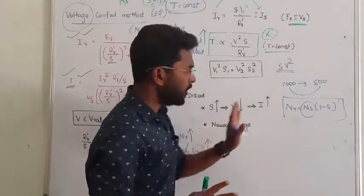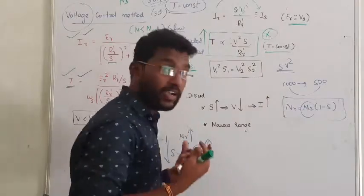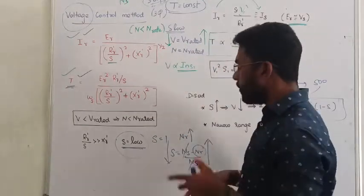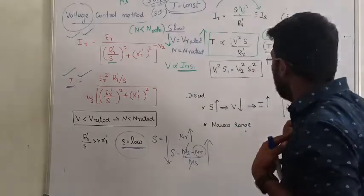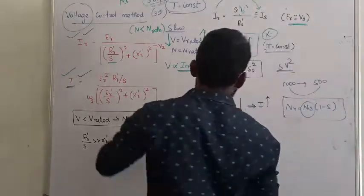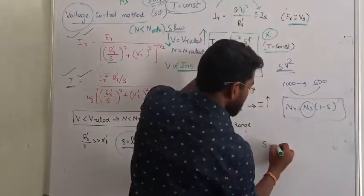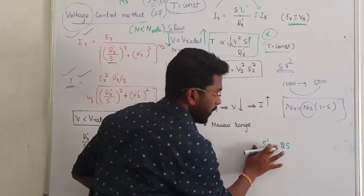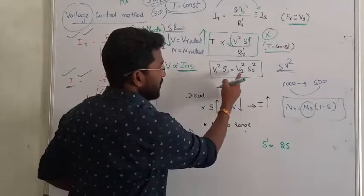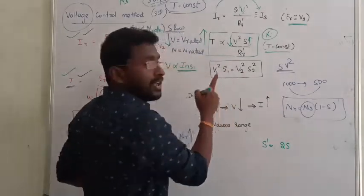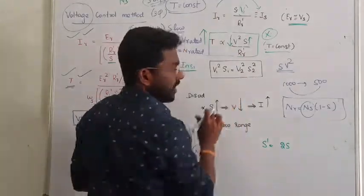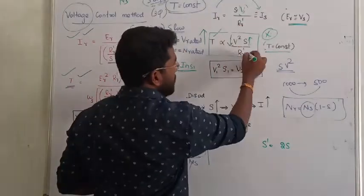Now, what is the problem with this method? There is a drawback. Whenever we try to increase the value of slip, we have to reduce the voltage. For example, if slip increases to twice its original value — S2 = 2·S1 — then using the equation V1²·S1 = V2²·S2 (since torque and rotor resistance are constant), we get V2² = V1²·(S1/S2) = V1²·(S1/2S1). So V2 = V1/√2.